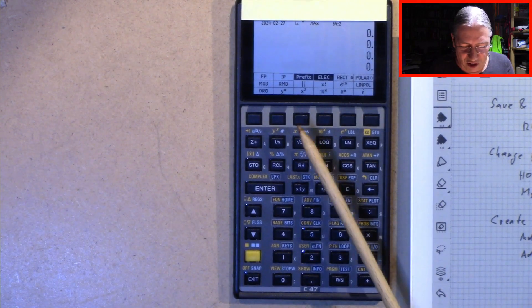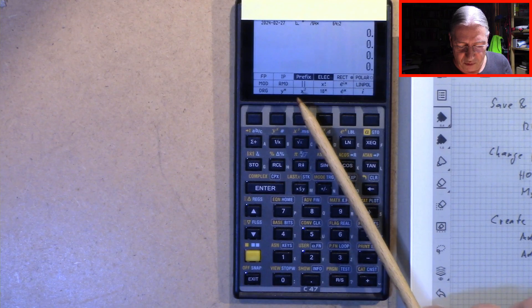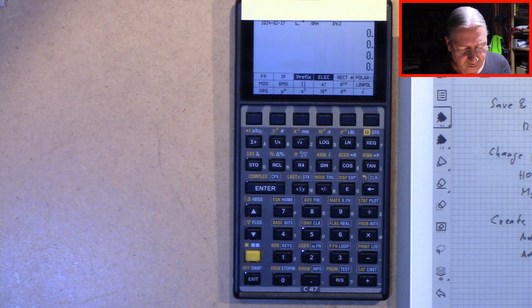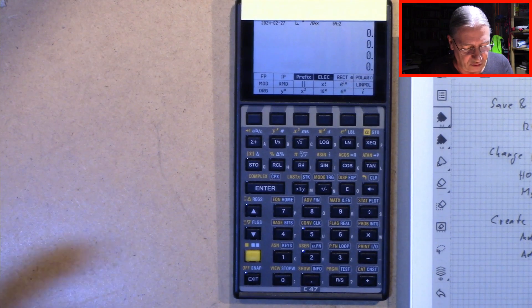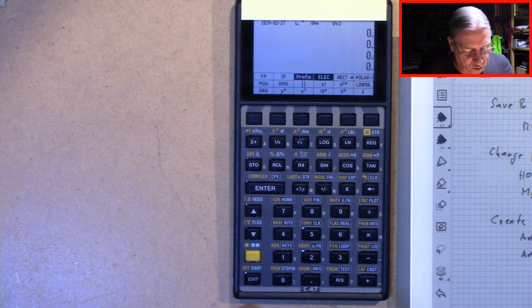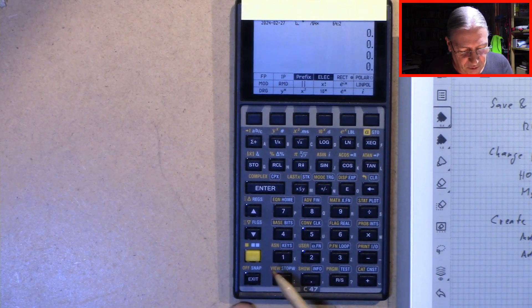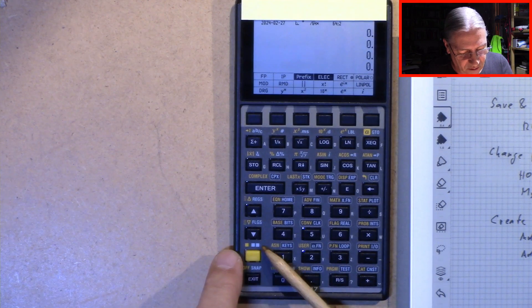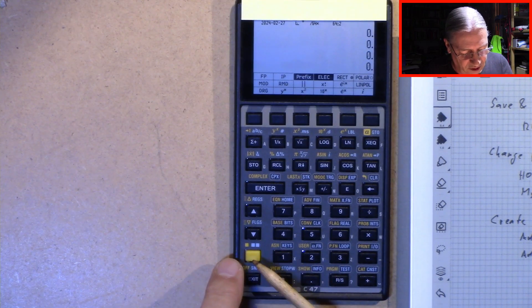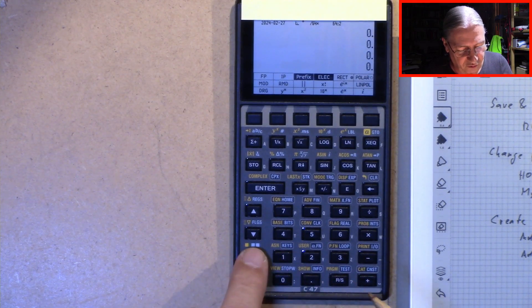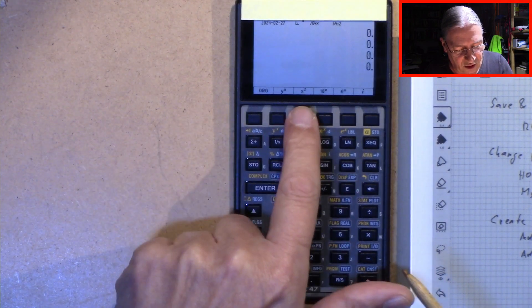So you have seen how we changed the home menu two times. Now let's take the my menu. The my menu can be reached by three quick tabs on the shift button. And here we are.